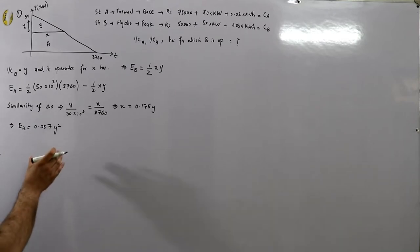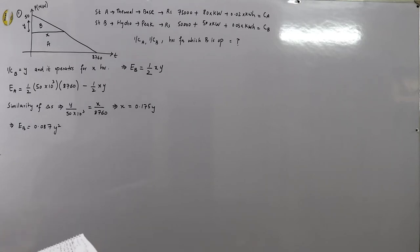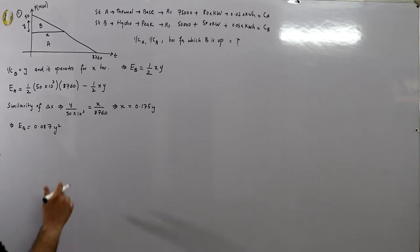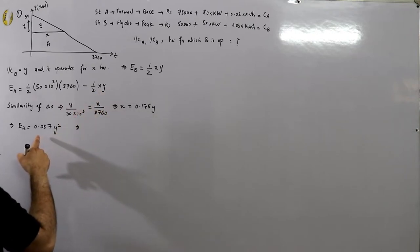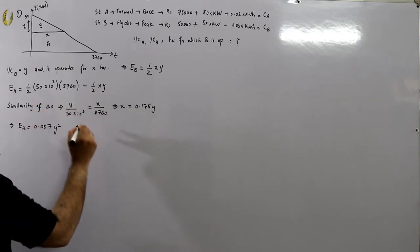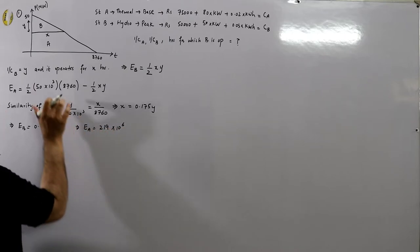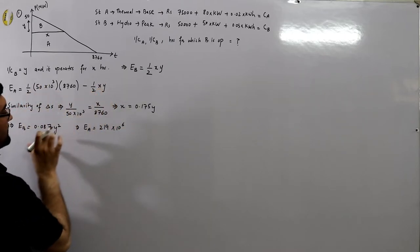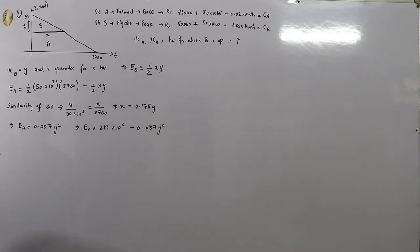Now substituting the value of E_B into the energy for A: E_A = 219 × 10⁶ − 0.087Y². We now have both energies in terms of Y, and can substitute into the cost models.